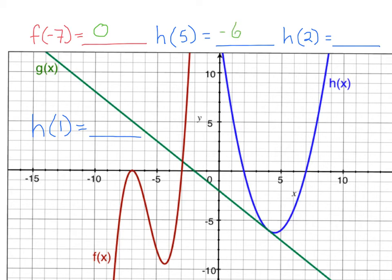Now let's look at what h of 2 is. I go to 2 on the x-axis and I see where the blue line is because that's h of x. When I go to 2 on the x-axis, the blue line is not up or down at all — it's at 0. So h of 2 is 0.